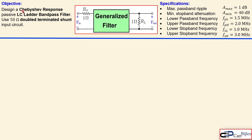We have the objective: design a Chebyshev response passive LC ladder bandpass filter and use 50 ohm double terminated shunt input. Looking at the generalized filter block — this will be the bandpass filter we need to design. The source resistor RS and the load resistor RL are both 1 ohm, so they are normalized. We will then scale it up to 50 ohm to get that 50 ohm double terminated shunt input circuit.